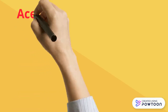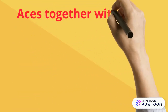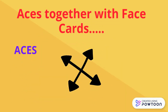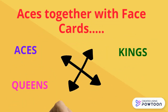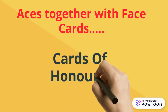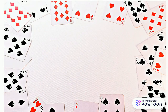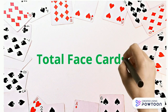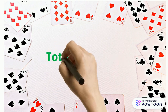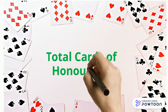The aces together with face cards — that is aces, kings, queens and jacks — are called cards of honor. To compile: total face cards in a deck of 52 cards are 12, and total cards of honor are 16.